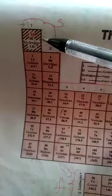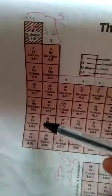Okay, so vertical columns are called groups and horizontal columns are called periods. We have seven periods: 1, 2, 3, 4, 5, 6, 7.